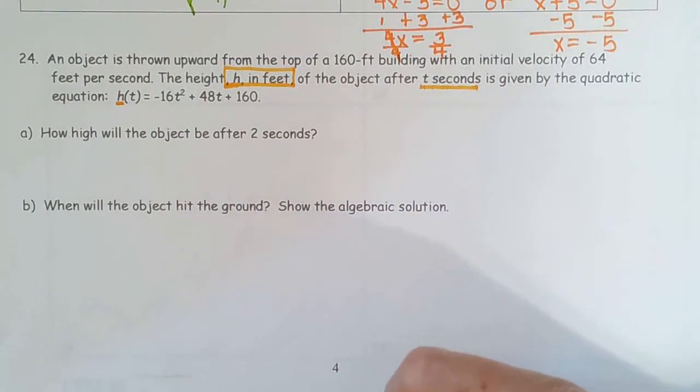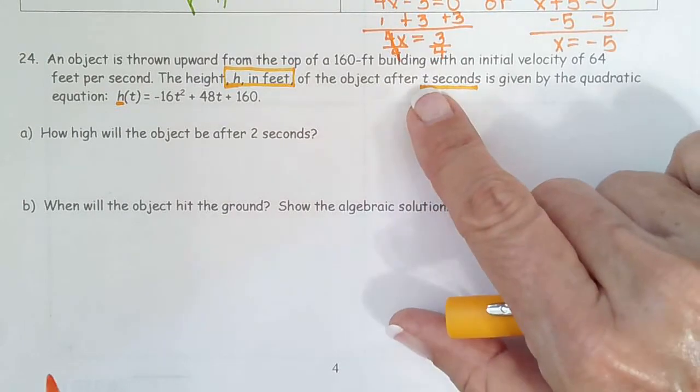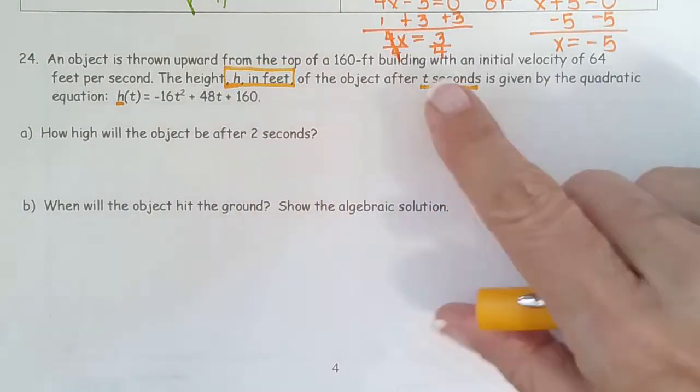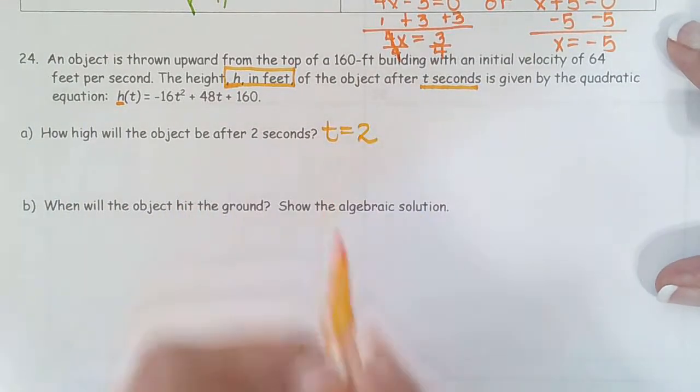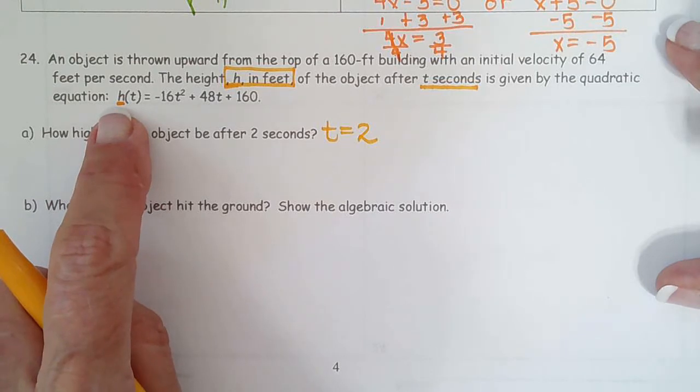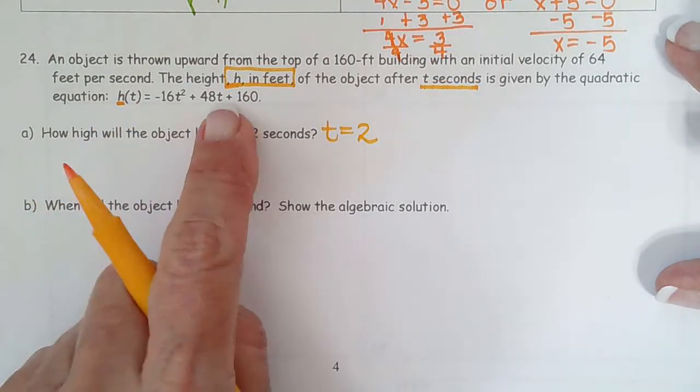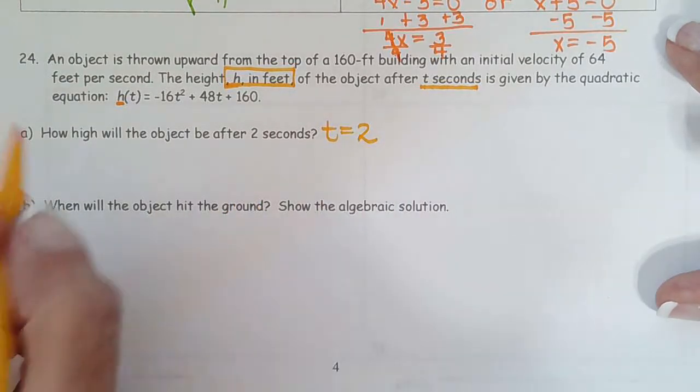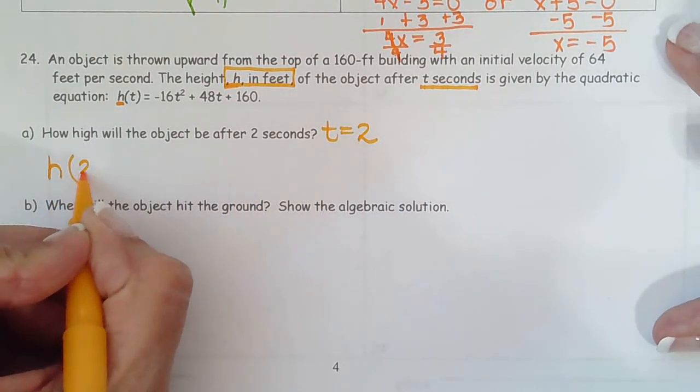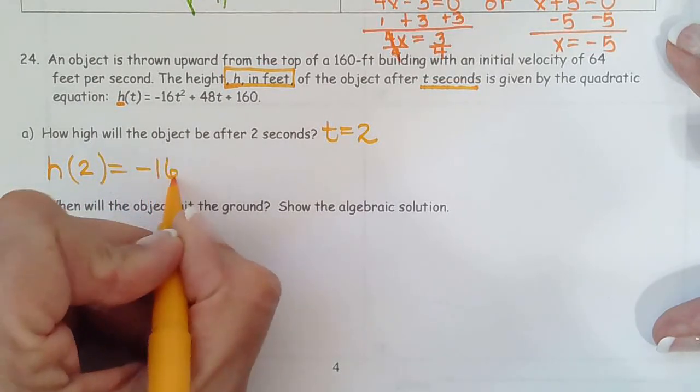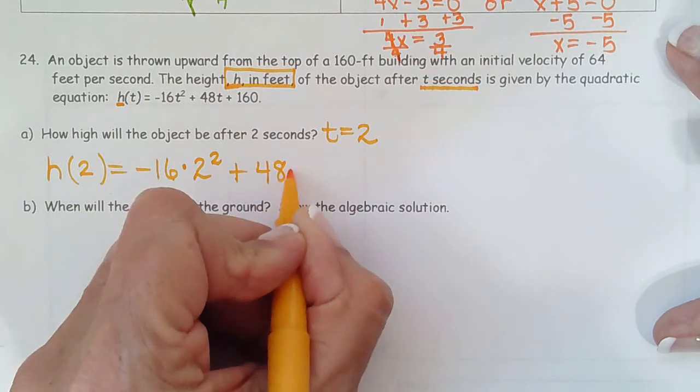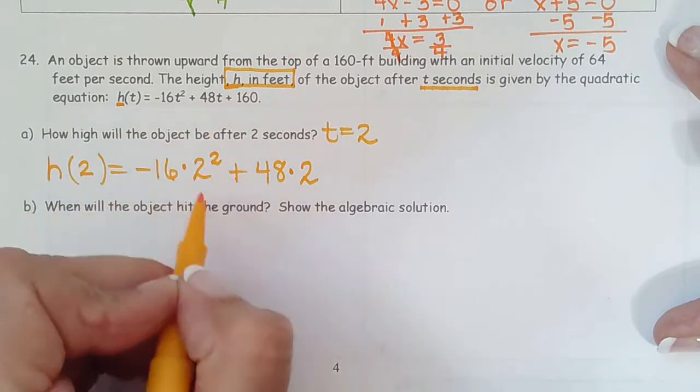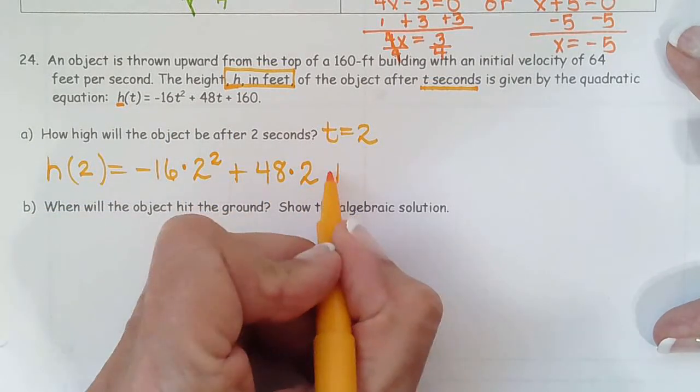So when it says how high will the object be after 2 seconds, you have to decide are you going to put 2 in for h or 2 in for t. And it says seconds, so you can see this means t equals 2. So then we go up into our equation and I see 1, 2, 3 t's. Every t needs to be replaced by 2. So h of 2 equals negative 16 times 2 squared plus 48 times 2. So I don't need parentheses since 2 is positive plus 160.